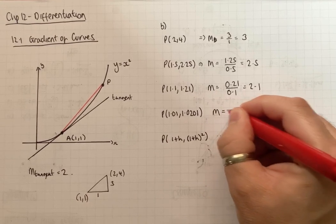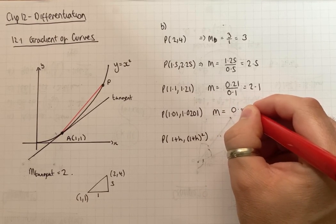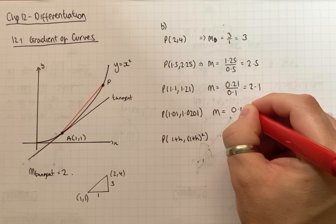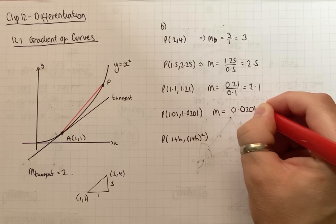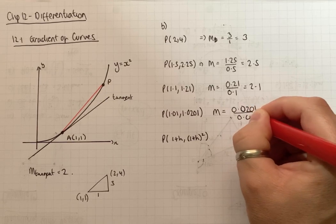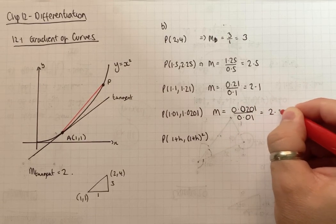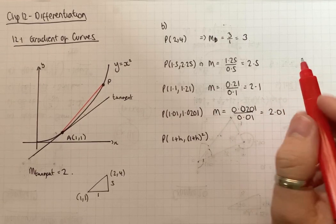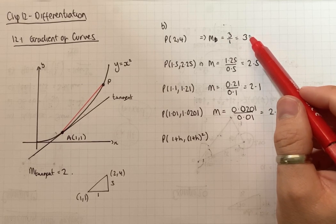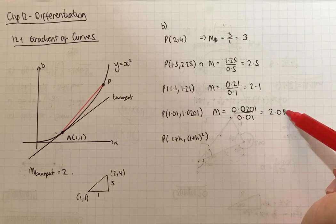The gradient of this one is going to be 0.0201 divided by 0.01 which is 2.01. So as you can see, the gradient goes from 3 to 2.5, 2.1, 2.01.